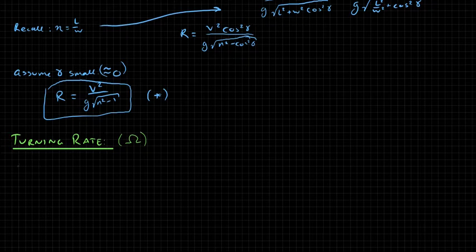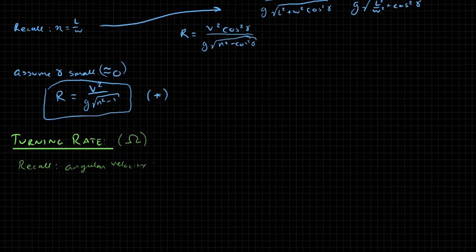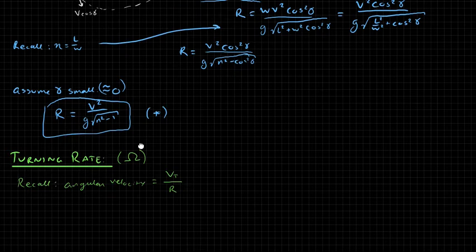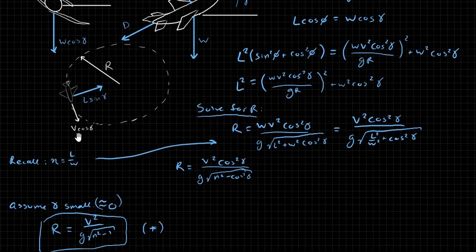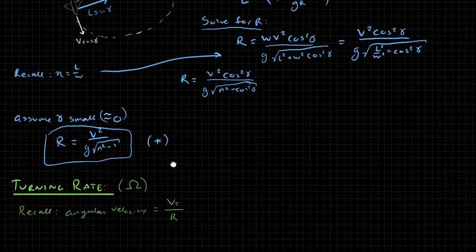Now because it's an angular velocity, we can use an expression that we know. So let's recall, this is something that you should have learned already. Recall that angular velocity is just the tangential velocity divided by R.